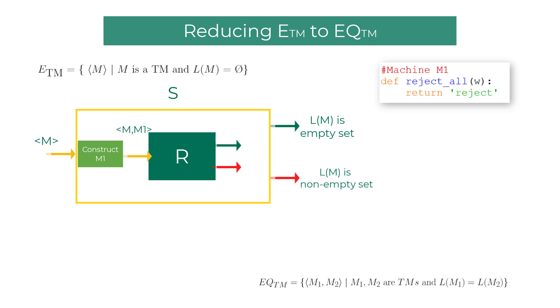If the decider R accepts, then the machine M's language should be an empty set because R just established equivalence between the reject all machine M1 and M. So I'll connect these two pins right there.